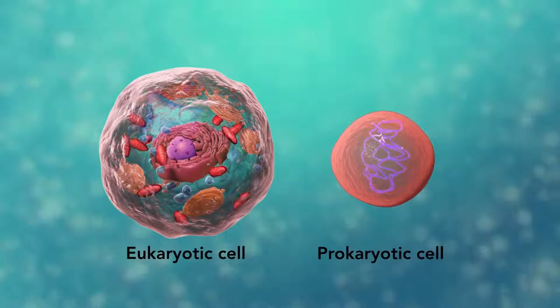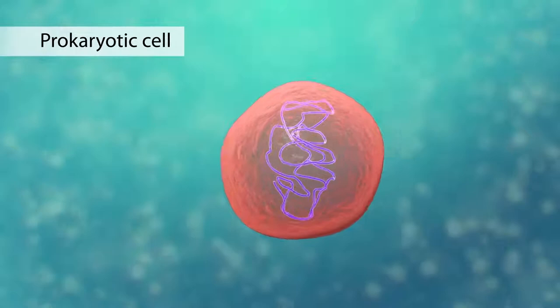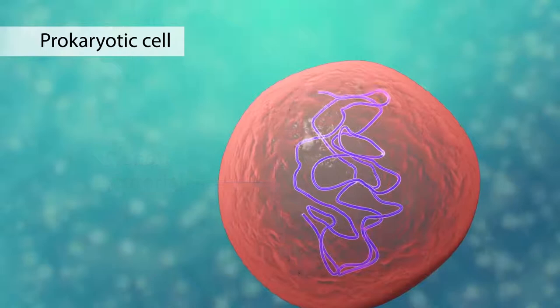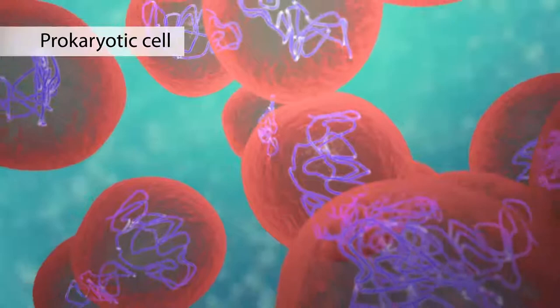The second category is prokaryotic cells. They don't have a nucleus or membrane-enclosed organelles. They do have genetic material but it's not contained within a nucleus. Prokaryotic cells are always one-celled or unicellular organisms such as bacteria.